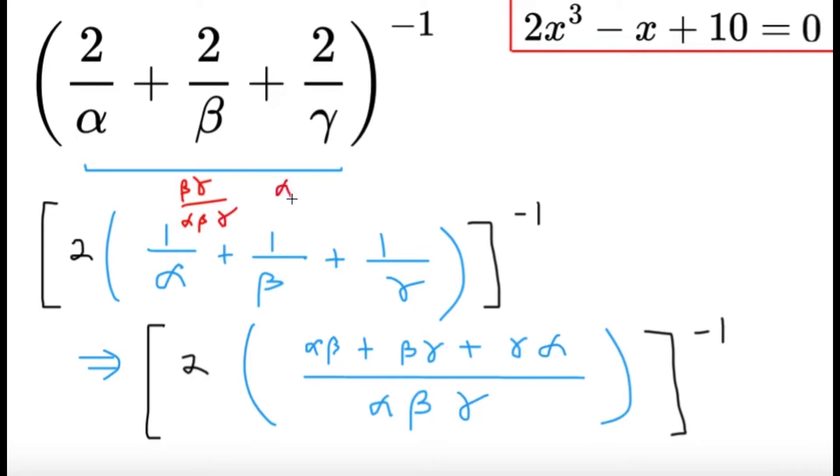And then 1 over beta is the same as gamma alpha divided by alpha beta gamma, and then 1 over gamma is just alpha beta divided by alpha beta gamma. So just writing it in terms of one fraction, we're going to get this.